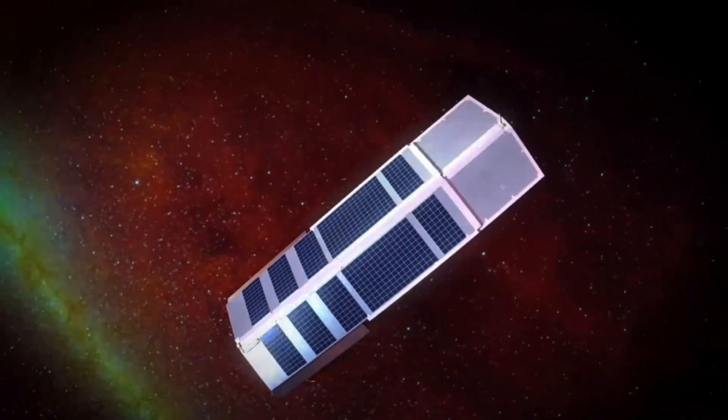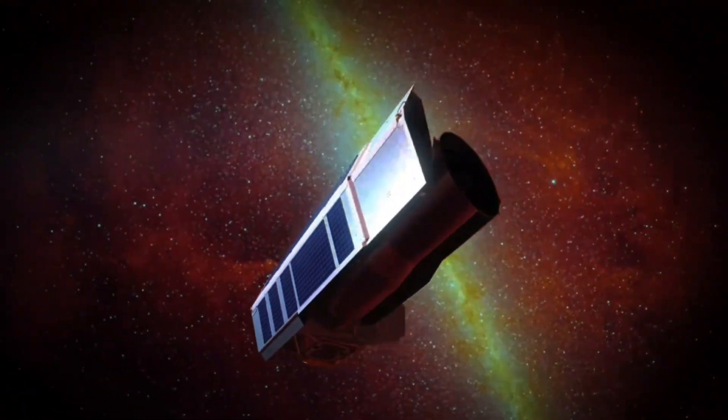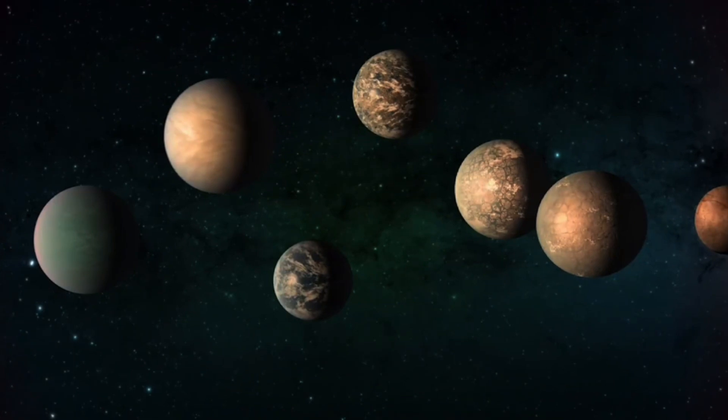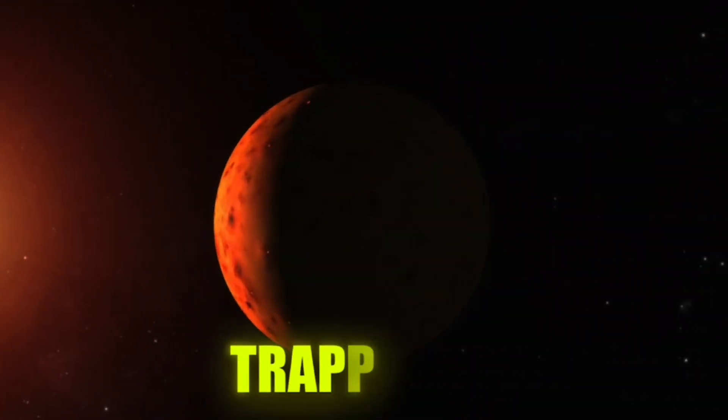Five years ago, NASA's Infrared Spitzer Space Telescope was instrumental in discovering a system of seven rocky exoplanets orbiting a single star known as TRAPPIST-1.